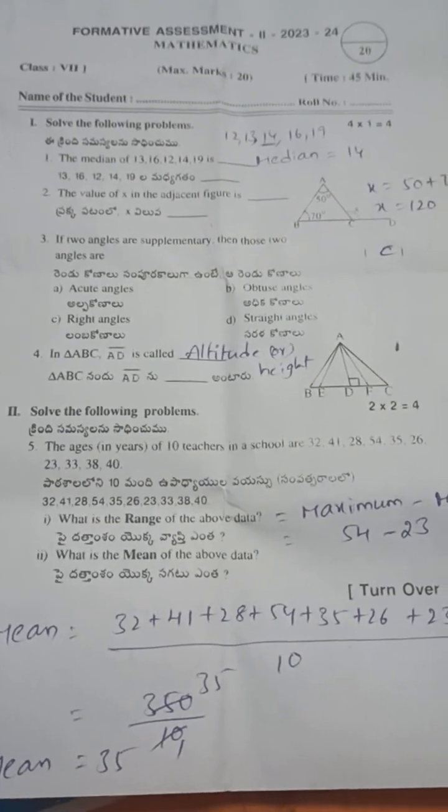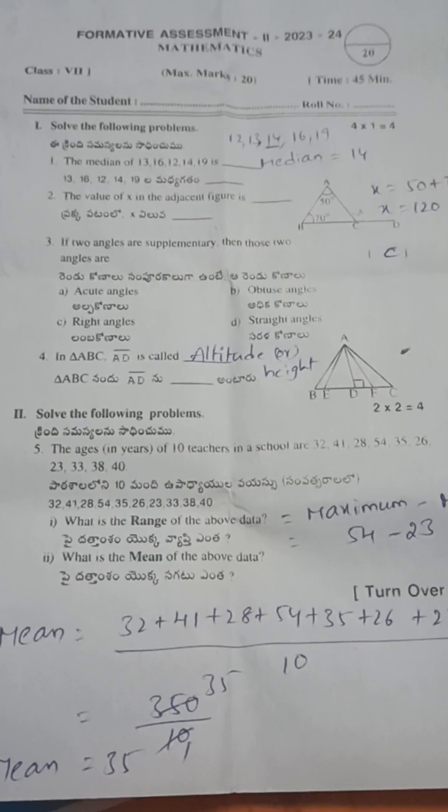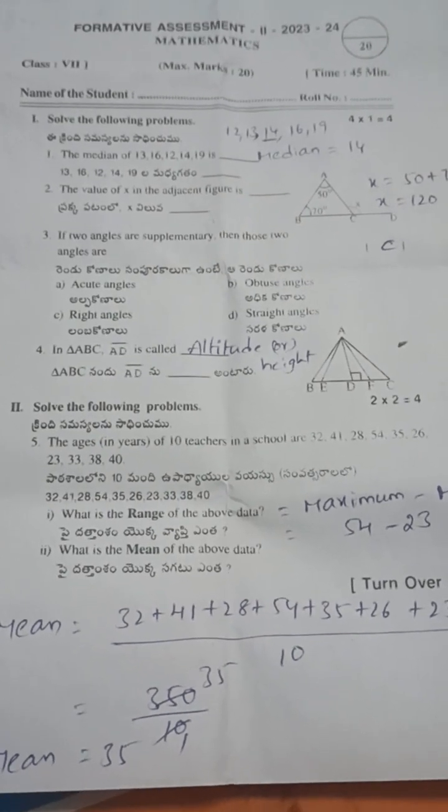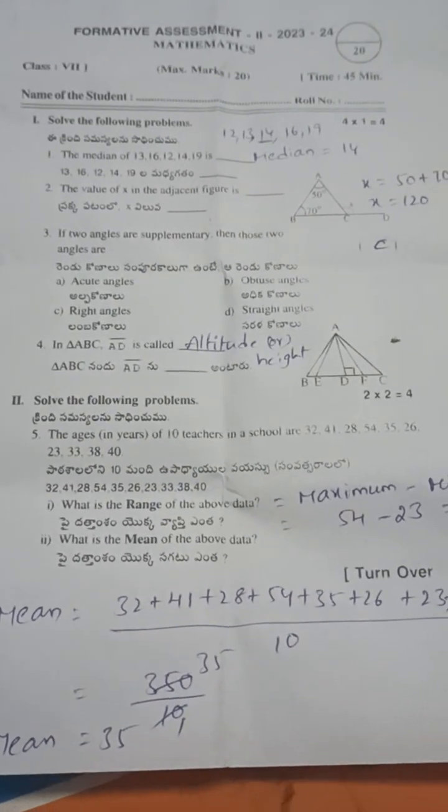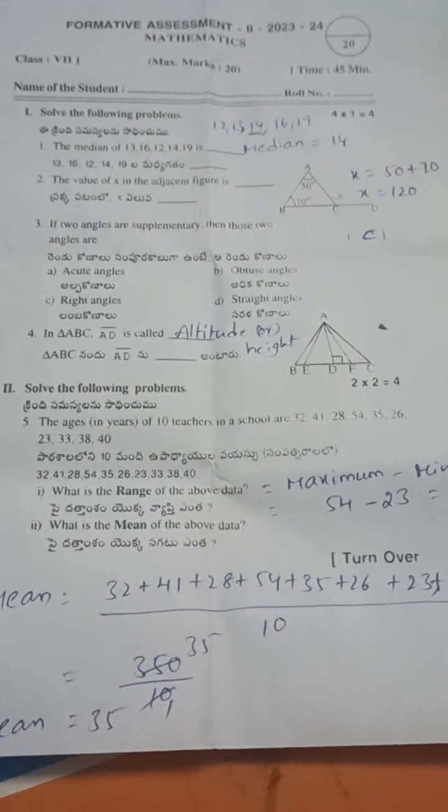Second one, the value of x in the same figure. So x is the exterior angle. Exterior angle property: exterior angle equals sum of opposite interior angles. So x equals 50 plus 70, that is 120.